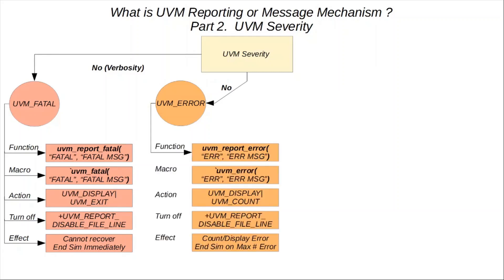The macro and function for UVM_ERROR are quite similar to UVM_FATAL. Again, the message ID and message body are the two required arguments, for both the function and the macro. The key difference is in effect: when the maximum error limit is reached, the simulation ends. The method to set the error count is called `set_max_quit_count`, and it takes an integer argument.